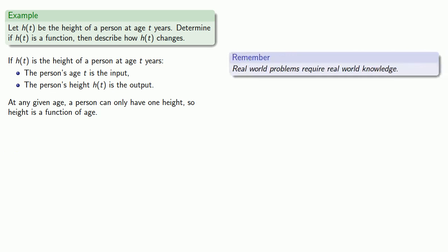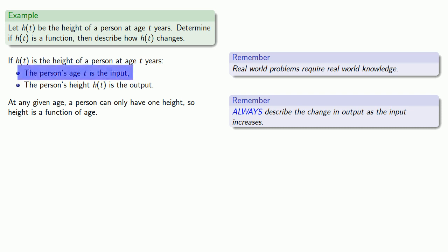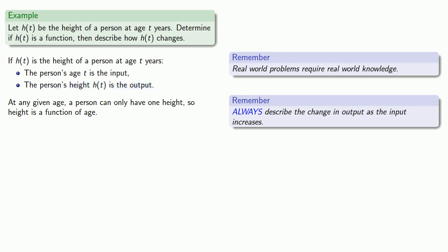Real-world problems require real-world knowledge, and that knowledge will be important in determining what happens to the function. Always describe the change in output as the input increases. Here, the person's age is the input and height is the output, so we want to describe what happens as a person's age increases.